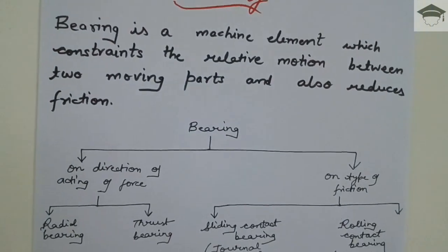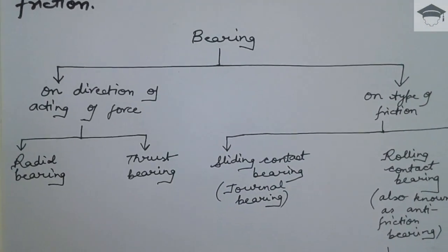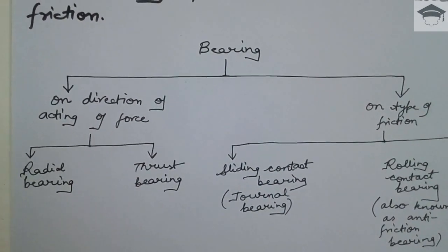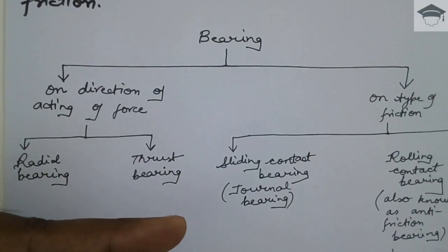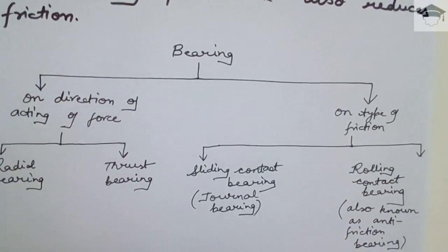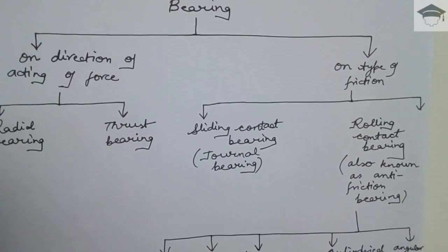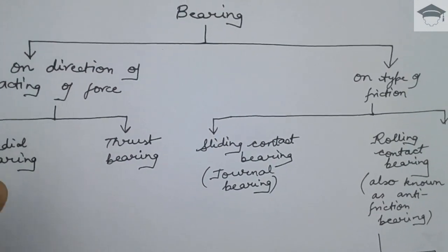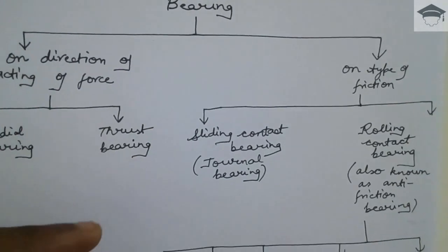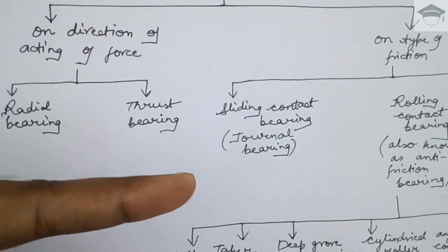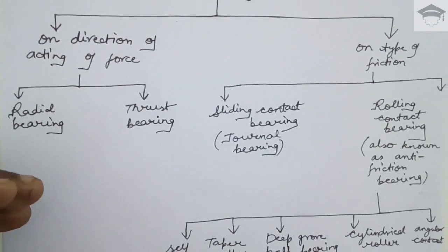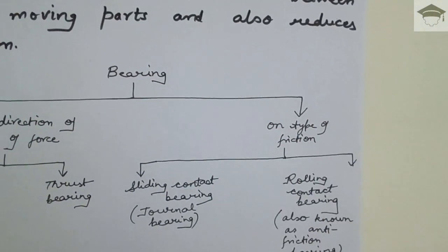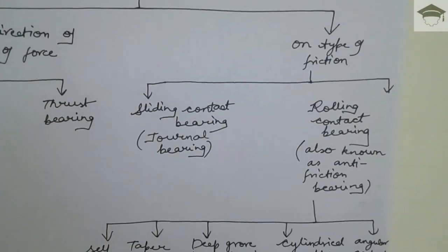There are many types of bearing and the major classification is on the basis of direction of the acting force and on the type of friction. Radial bearing — if the shaft is oriented like this and the force is acting in the radial direction, we use a radial bearing. Thrust bearing — if the shaft is like this and the direction of force is along the shaft axis, the bearing used is known as a thrust bearing. On the basis of type of friction, bearings are classified as sliding contact bearing and rolling contact bearing.